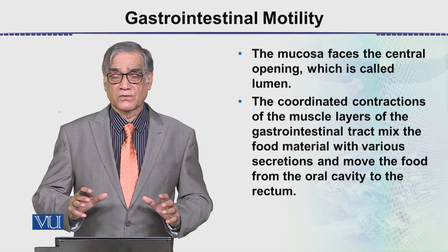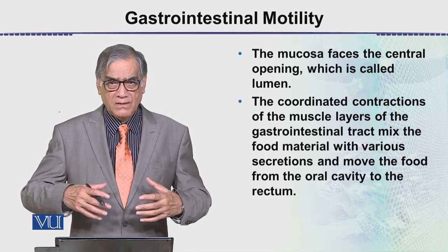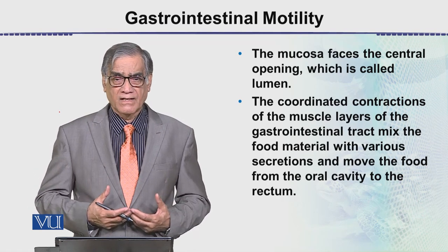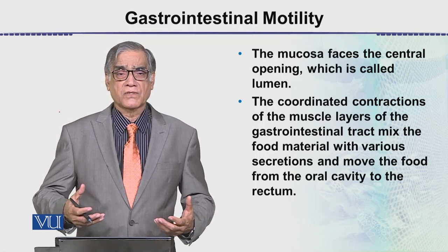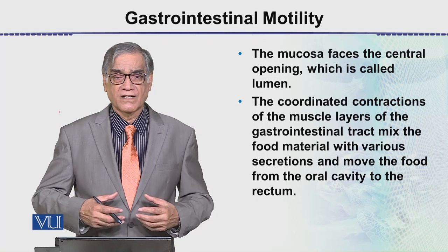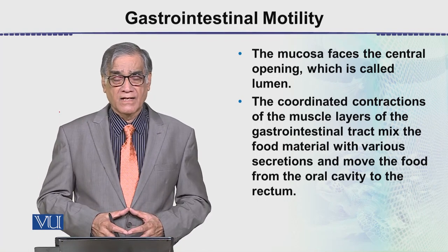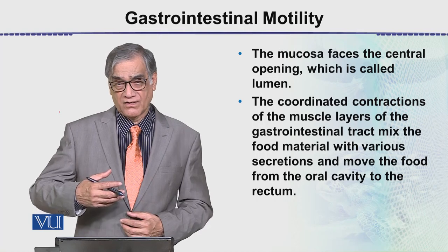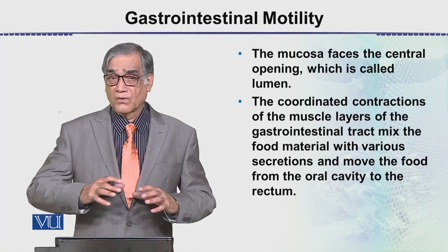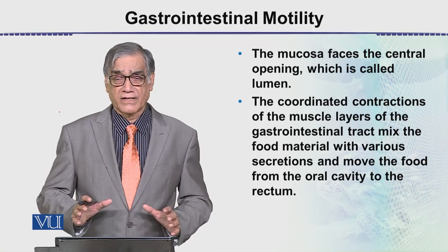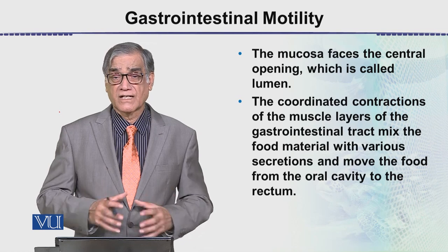After swallowing, we don't know how the food moves along. We only learn that when we study it. Otherwise, if you ask any common person where the food is right now, they won't know — they just know they have eaten it, that's all. But the movement that happens after that, and the process of digestion, it is all involuntary. This is what automation means, and it is a natural process — it is a marvellous process.